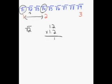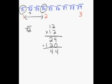So 1.2 times 1.2: 2 times 2 is 4, 2 times 1 is 2, placeholder, 1 times 2 is 2, 1 times 1 is 1. Add: 4, 4, 1. I have two decimals in my problem, so I need two decimals in my answer. And I got 1.44.